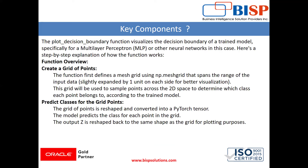The decision boundary function visualizes the data and the decision boundary of a trained model, specifically for a multilayer perceptron or other neural networks. The function first defines a mesh grid using NumPy that spans the range of the input data, slightly expanded by one unit on each side for better visualization. The grid of points is then reshaped and converted into a PyTorch tensor, and the model predicts the class of each point in the grid.